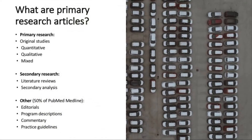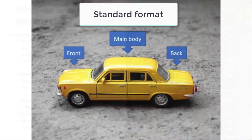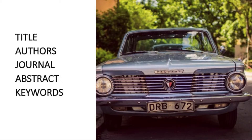To recognize a research article — primary or secondary — from other types, you can look for format and characteristics unique to research. The way to present research in articles is standard. Once you become familiar with the conventional features, you will read and know what to anticipate, making it easier and faster. We can think of an article having three main parts. The front includes title, authors, abstract, and keywords.